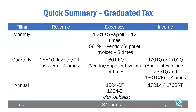Form 1601C is filed 12 times — monthly from January to December. Then you have Form 0619E, which is based on your vendor or supplier invoice. This is filed eight times — remember, it's filed for the first two months of the quarter, so two times four quarters equals eight times in a year.